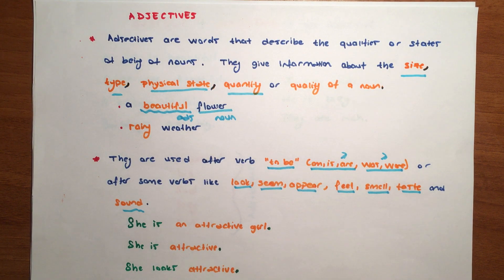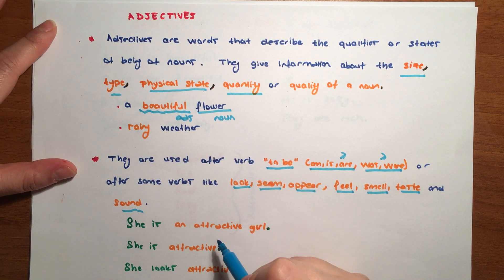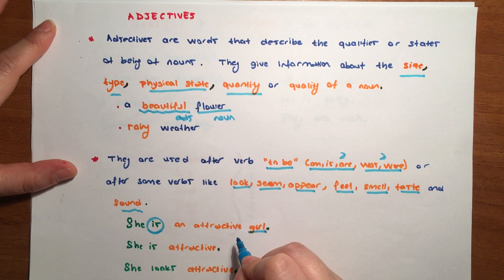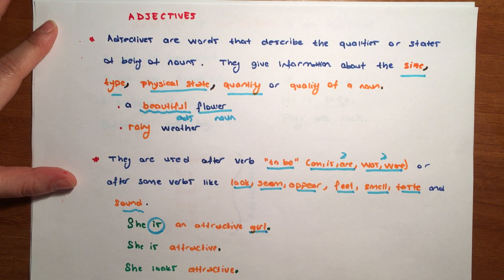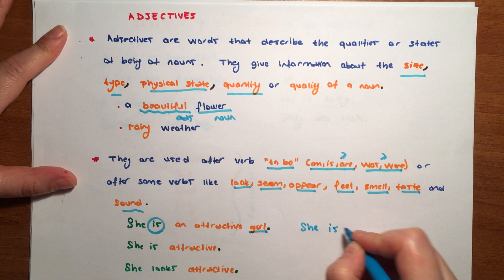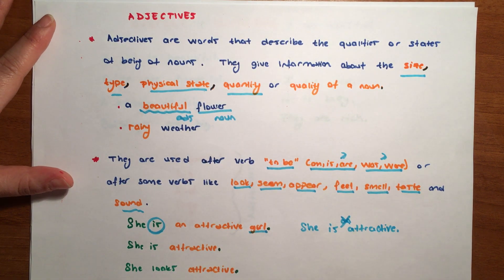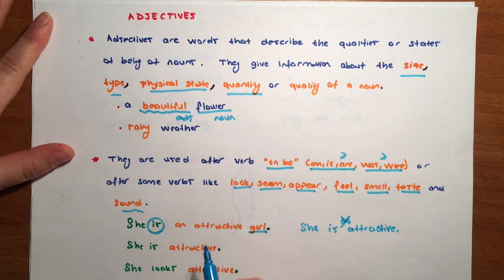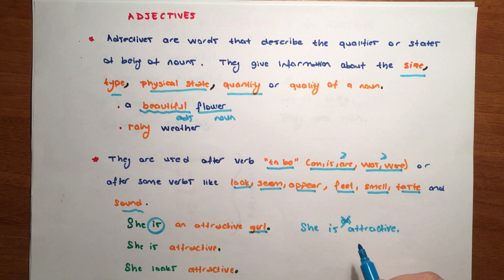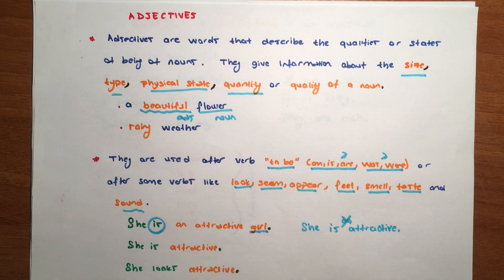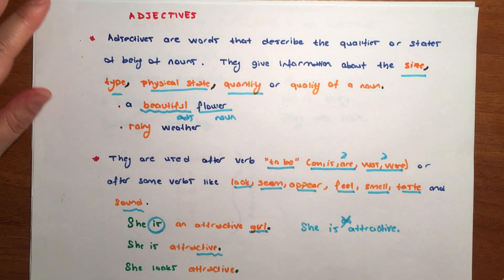And we also use them after verbs like look, seem, appear, feel, smell, taste, and sound. Let's see examples. She is an attractive girl. What did we do? We used to be verb, is. She is an attractive girl. Or even without using girl, we can say she is attractive. In this case, what don't we do? An doesn't come before adjectives alone. We can't say she is an attractive without a noun. But when we make an adjective phrase, she is an attractive girl, we can say she is an attractive girl.